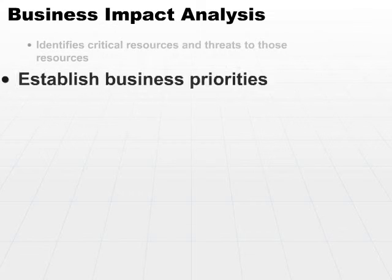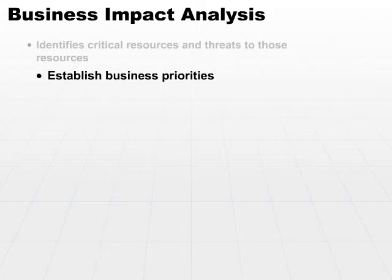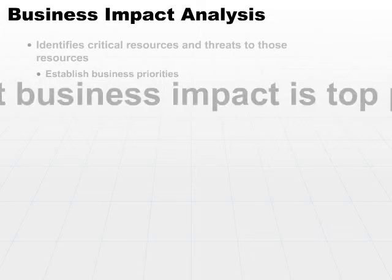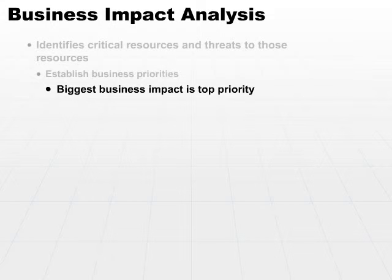The first step is to establish your business priorities — what's most important? The biggest business impact is the top priority. In other words, what does our business actually do? List the prioritized processes your business is engaged in, and place the most critical one at the top. This is the most important process that we must be able to protect.